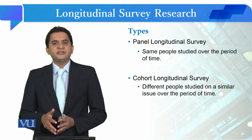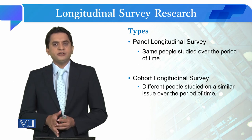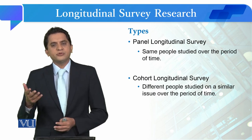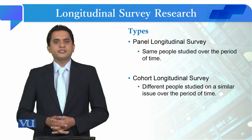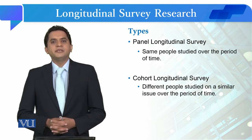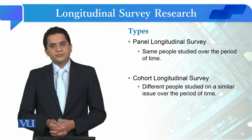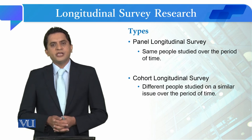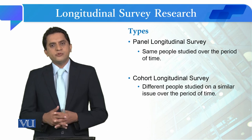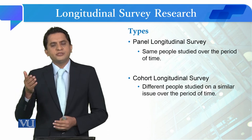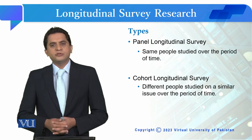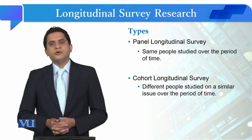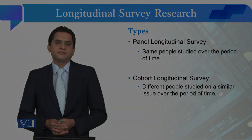In a cohort longitudinal survey, the population characteristics remain similar, but the respondents can change — it is not necessary to collect data from exactly the same people again. The sample characteristics are similar. For example, if you want to study political participation among university students in Lahore, you select universities to study, and then two years later you study a new group of students in Lahore with similar characteristics. This design is called a cohort longitudinal survey.